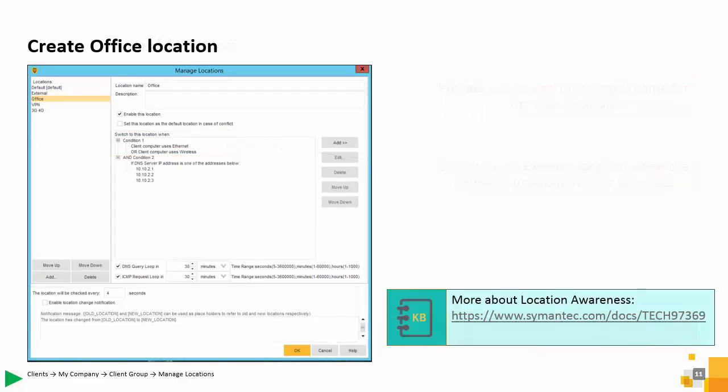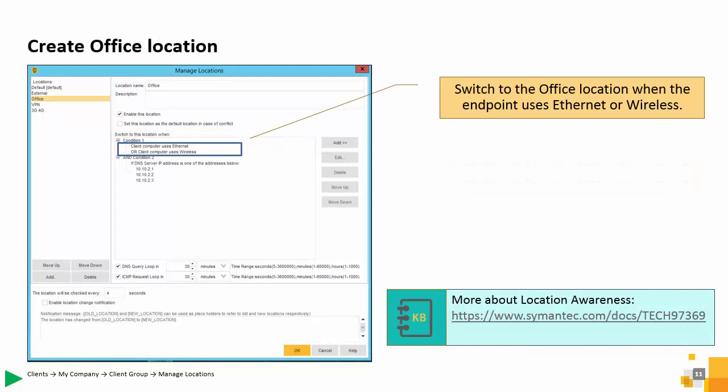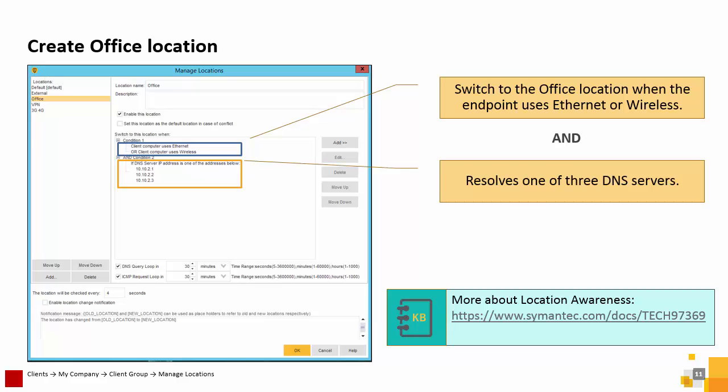The office location uses two conditions. Condition 1 checks to see if the endpoint is using an Ethernet or wireless connection. If true, it moves to the second condition. Condition 2 checks to see if the client computer can resolve one of the three DNS servers. If also true, the endpoint shifts to the office location. For more information on location awareness conditions, see the KB article shown on the slide.